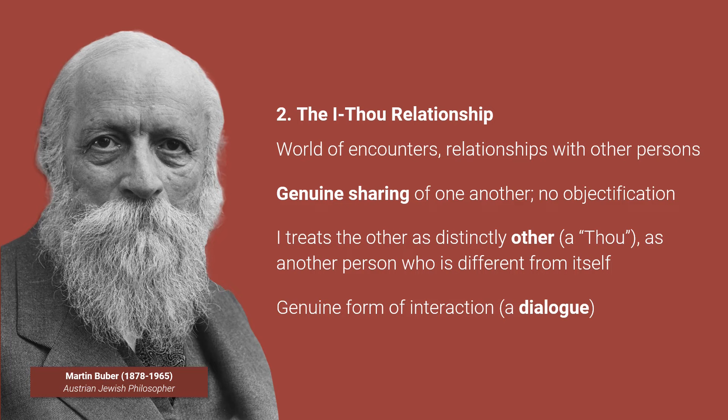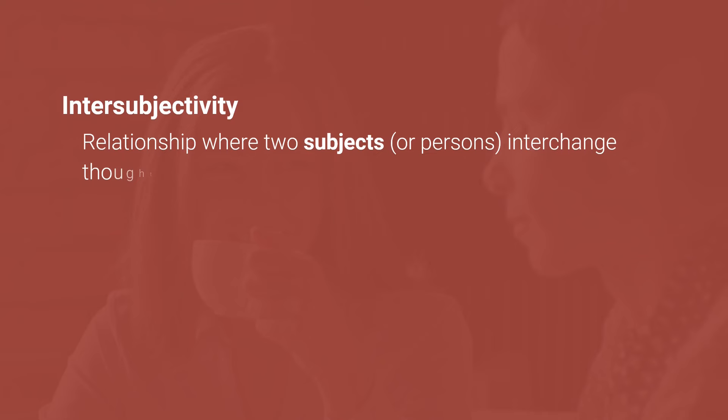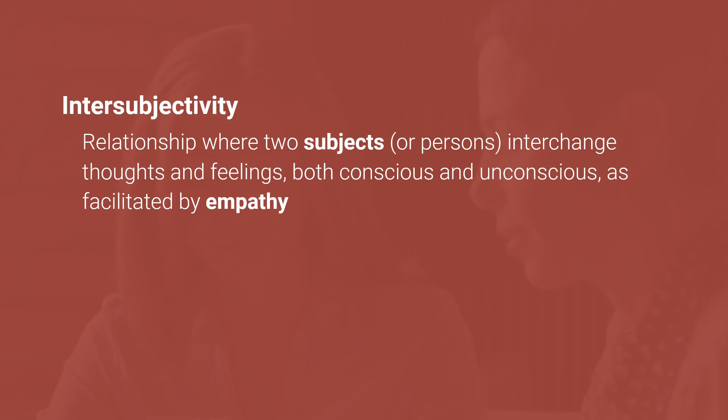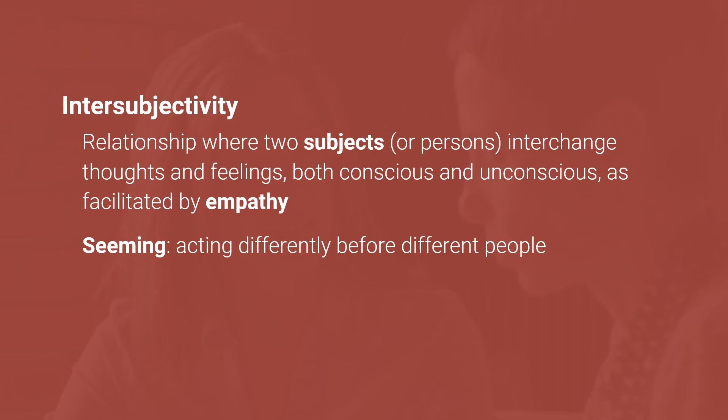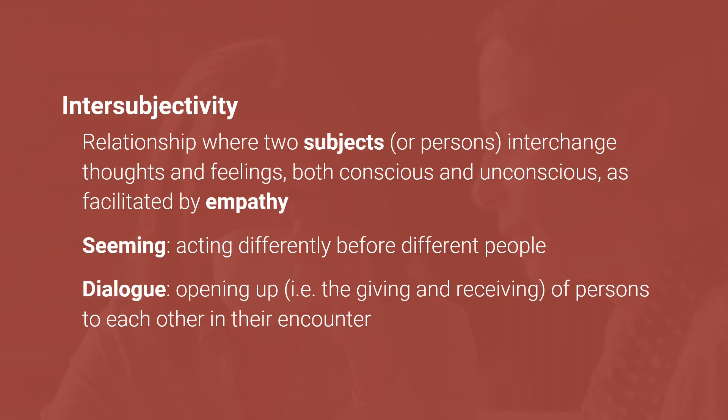To recap, intersubjectivity is a kind of relationship where two subjects or persons interchange thoughts and feelings, both conscious and unconscious, as facilitated by empathy. In any relationship, however, human beings become conscious of their self-image and how others see them. As such, they tend to act differently before different people, an attitude known as seeming. Despite this, human beings still long for a deeper and more genuine interaction with others, a longing fulfilled only by dialogue — the opening up, the giving and receiving, of persons to each other in their encounter.